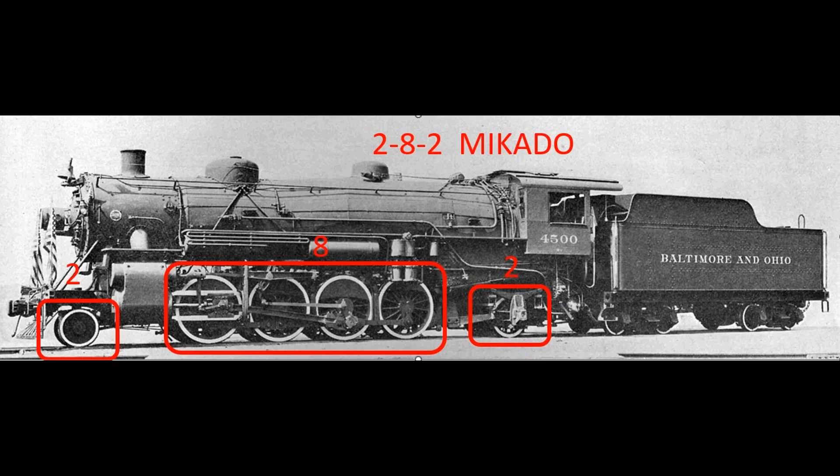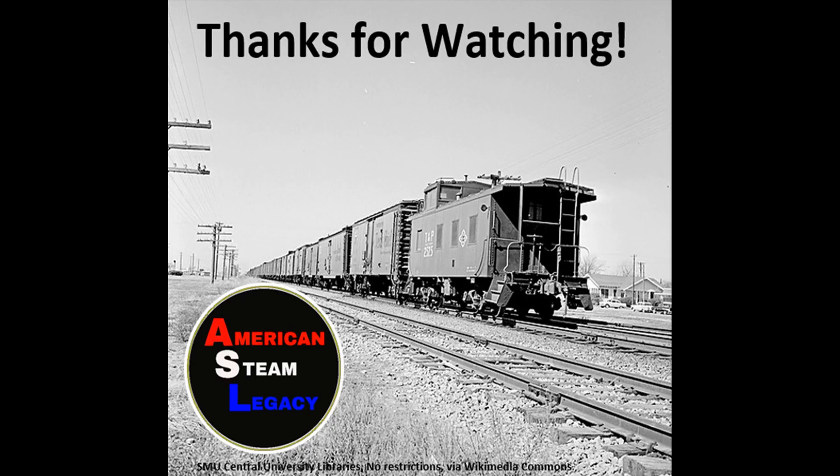If we combine all three numbers — the number of wheels on the pilot truck, the drivers, and the trailer — we have 2-8-2. Locomotives of the 2-8-2 wheel configuration are commonly known to American railroaders as a Mikado, or Mike for short. We'll take a more in-depth look at the Mikado in part two of this series, where we look at the eight- and ten-coupled American steam locomotives. I hope you enjoyed the introduction to the white notation. Please join me in part one, where we'll look at the four- and six-coupled locomotives of the white notation. My name's Steve, and thanks for watching.